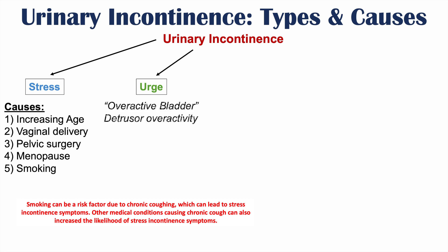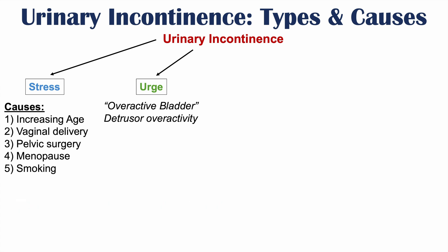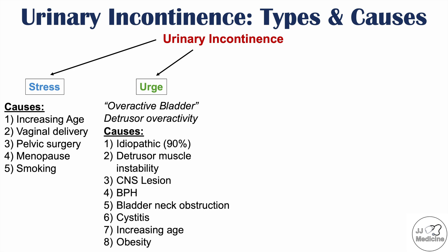Urge incontinence is also known as an overactive bladder and is ultimately due to detrusor overactivity. The detrusor muscles are responsible for allowing contraction of the bladder and proper urinary control, but with urge incontinence there is detrusor overactivity. The main cause is idiopathic, meaning we don't know the cause, occurring in roughly 90% of patients. A second cause is detrusor muscle instability, and a third is central nervous system lesions.